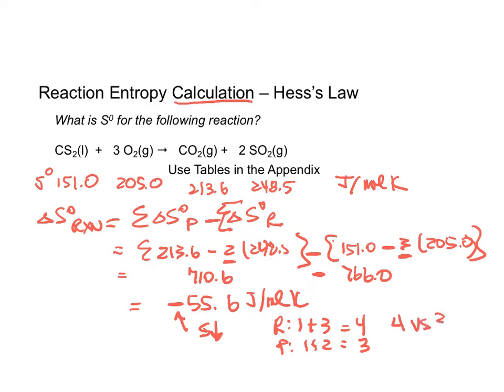If we look at 4 versus 3, we are going to more order. And more order says a negative value for ΔS. So again, all of this is extremely logical.